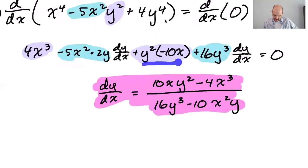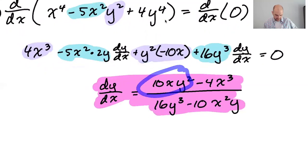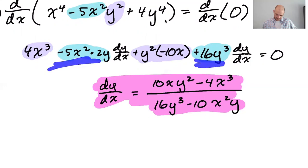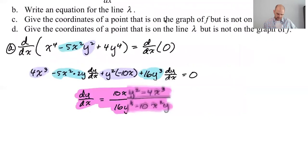Let's check: negative 10xy squared when brought over becomes positive, plus 4x cubed becomes negative when brought over. The denominator terms don't change signs because we're dividing. Yeah, I think that's good. Part A is done.